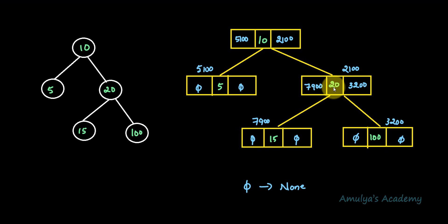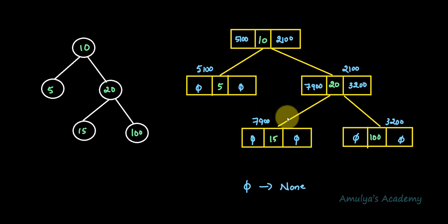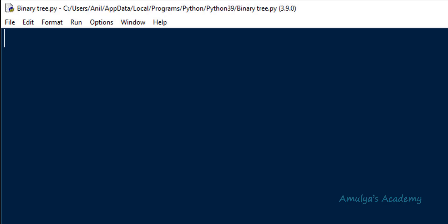Coming to the next node — twenty is the key. We have the left child link or reference, and we can see the link or reference of the right child. Both child nodes don't contain left and right children, that's why we can see none there. So we are representing the tree like this in our program — every node is an object and every object contains three parts: key, left child, and right child.